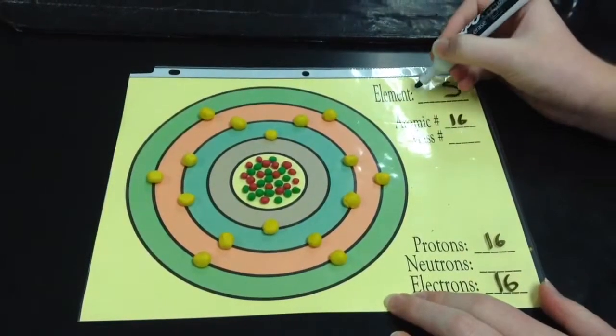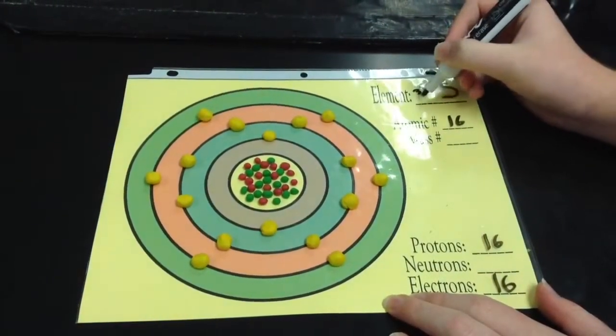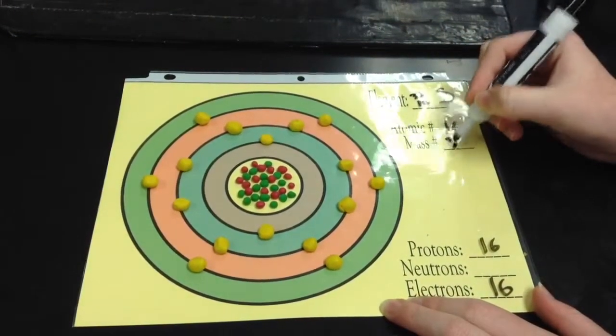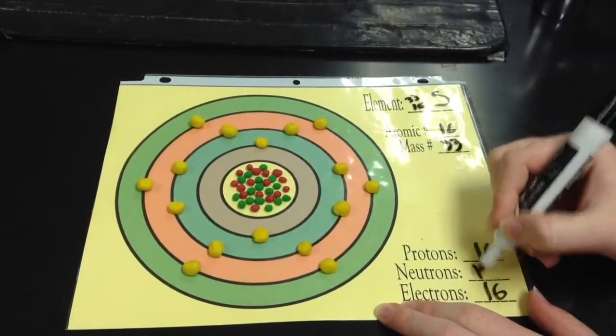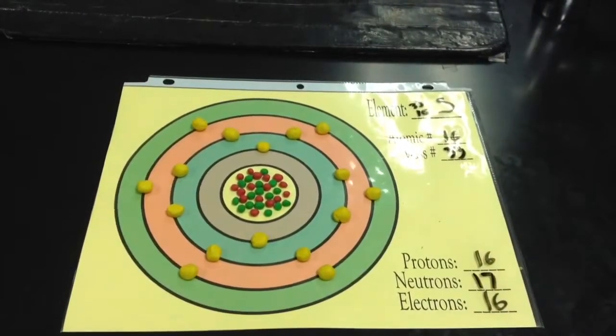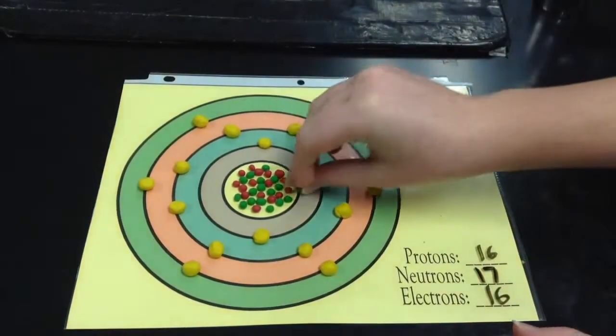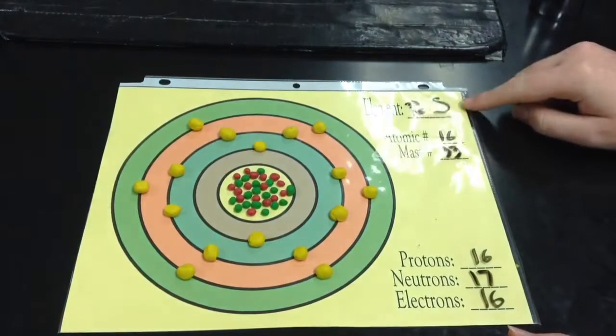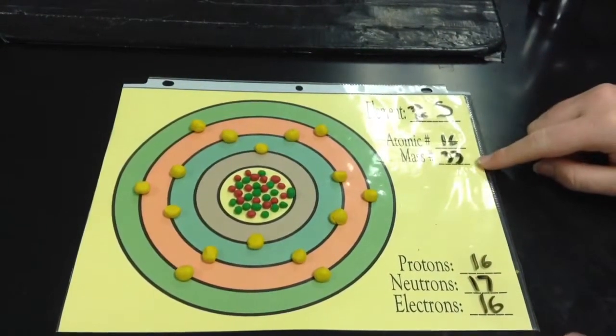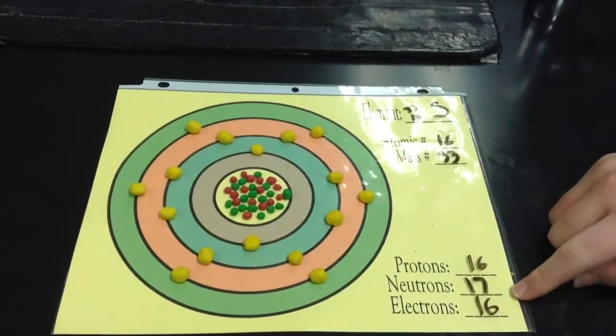This is sulfur-33, a slightly less abundant form of the sulfur atom. It appears only 0.75% of the time. It has 16 protons, 17 neutrons, and 16 electrons, which gives it a mass of 33 atomic mass units.